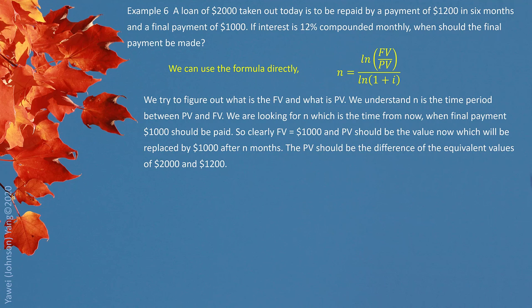So clearly, future value is $1,000. And the present value should be the value now, which will be replaced by $1,000 after. And then the present value should be the difference of the equivalent values of $2,000 and $1,500. But make sure we understand $2,000 is the loan and $1,500 is the payment. So they are in different direction. So when we look at the total of them should do subtraction.